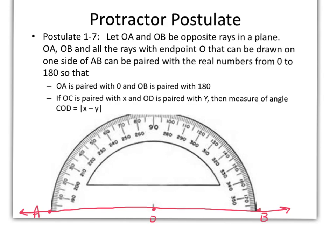So they're opposite rays in a plane. And all the rays with endpoint O that can be drawn on one side of AB are going to be paired with the numbers from 0 to 180. And this is to divide this arc into 180 degrees because it is a semicircle.